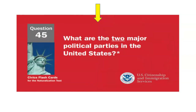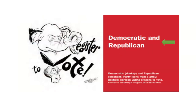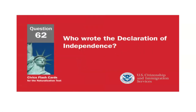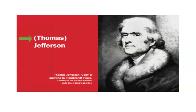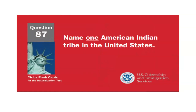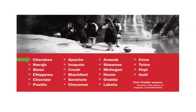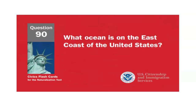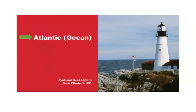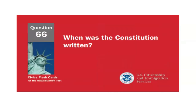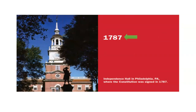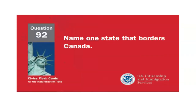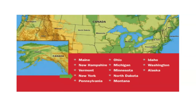What are the two major political parties in the United States? Democratic and Republican. Who wrote the Declaration of Independence? Thomas Jefferson. Name one American Indian tribe in the United States. Cherokee. What ocean is on the East Coast of the United States? Atlantic Ocean. When was the Constitution written? 1787. Name one state that borders Canada. New York.